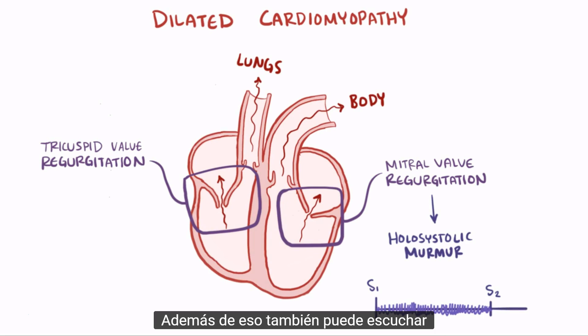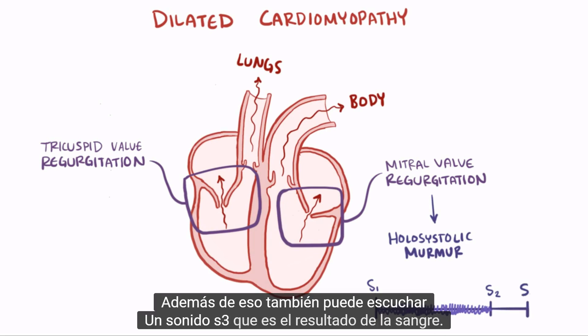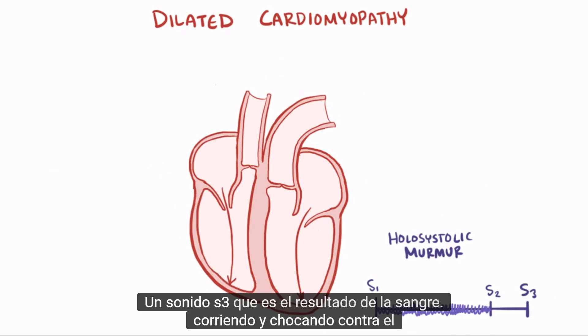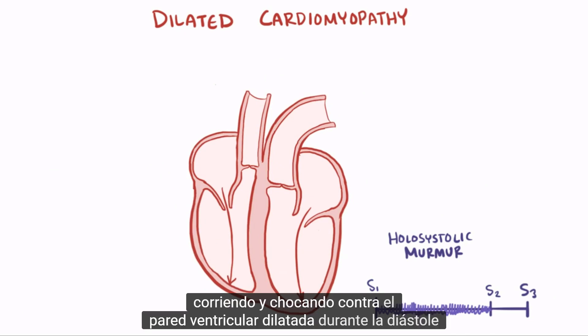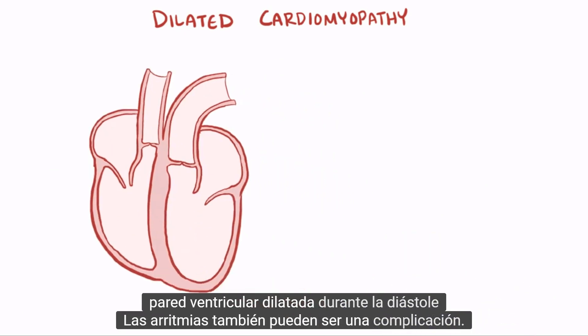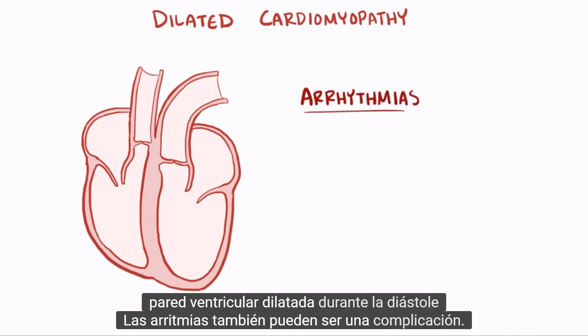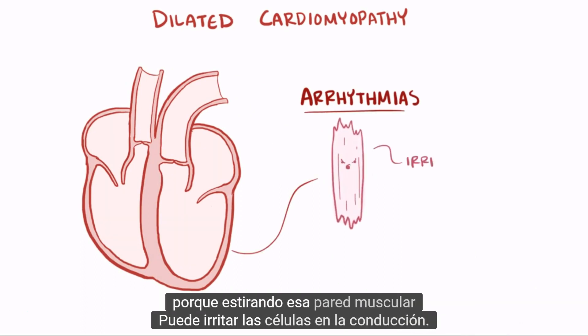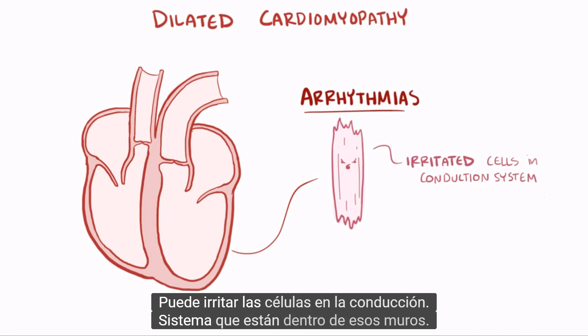In addition to that, you might also hear an S3 sound, which is the result of blood rushing into and slamming into the dilated ventricular wall during diastole. Arrhythmias can also be a complication, because stretching out that muscle wall can irritate the cells in the conduction system, which are within those walls.